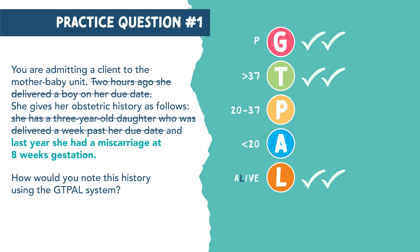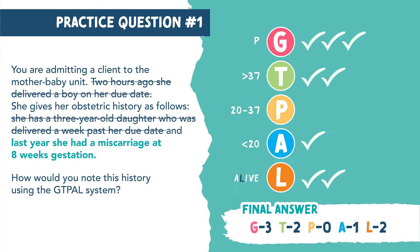I'm now going to cross that statement out. Last year, she had a miscarriage at eight weeks gestation. She was pregnant again, so another tally next to G. And she miscarried at eight weeks, which is considered A, so we put a tally next to A. But note: we don't count this towards L because L means alive, and this baby is not alive — it was a miscarriage. Making our final answer G3, T2, P0, A1, and L2.